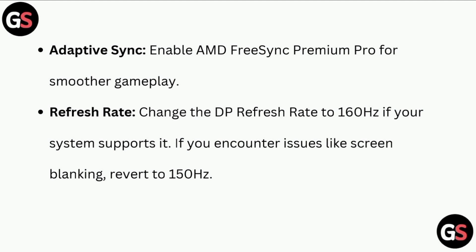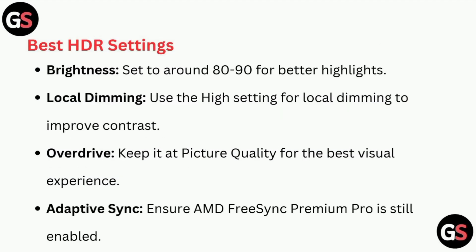Refresh rate: change the DisplayPort refresh rate to 160Hz if your system supports it. If you encounter issues like screen blanking, revert to 150Hz. Coming to the best HDR settings: brightness set to around 80 to 90 for better highlights.